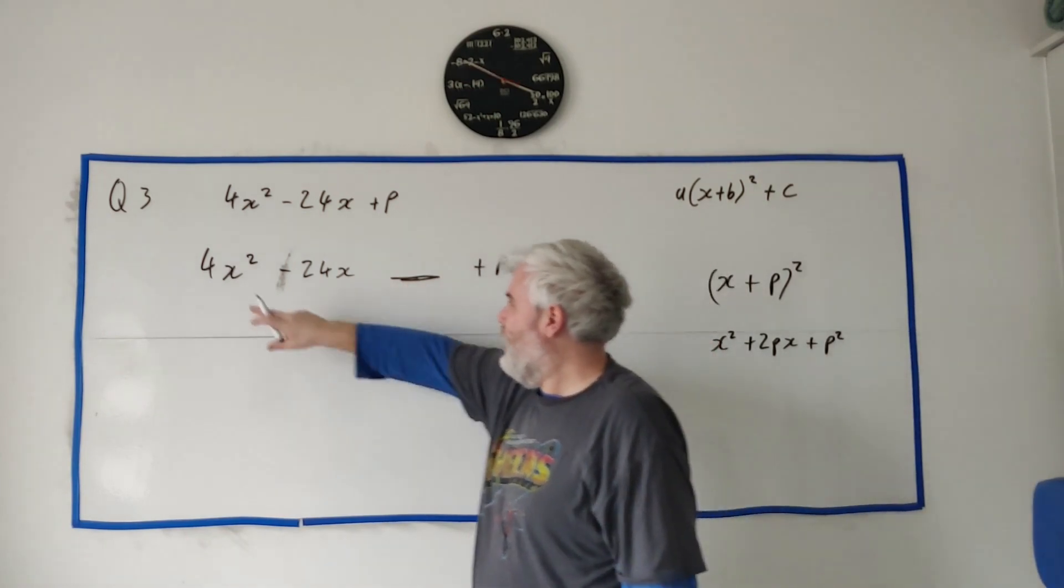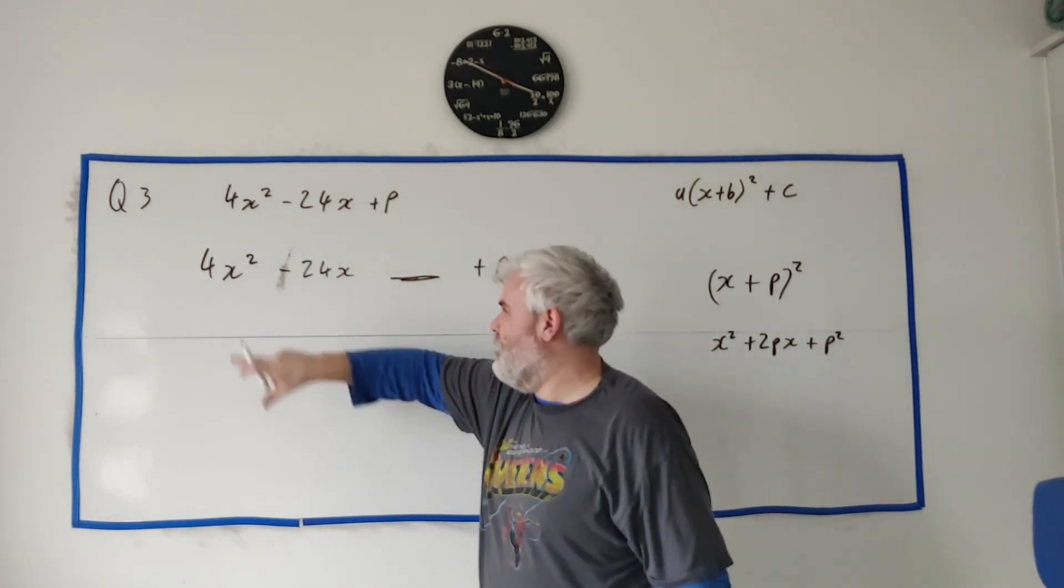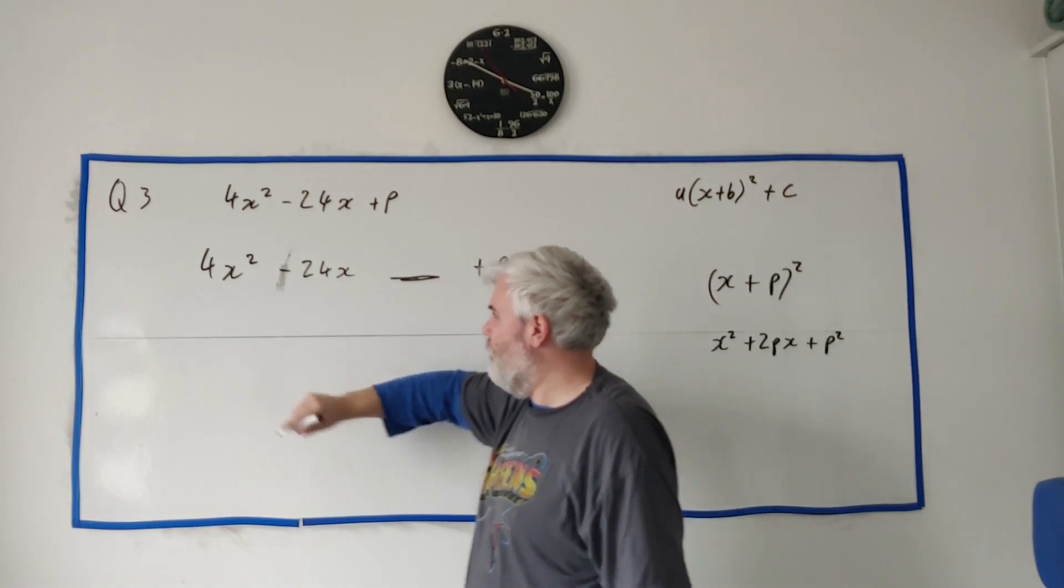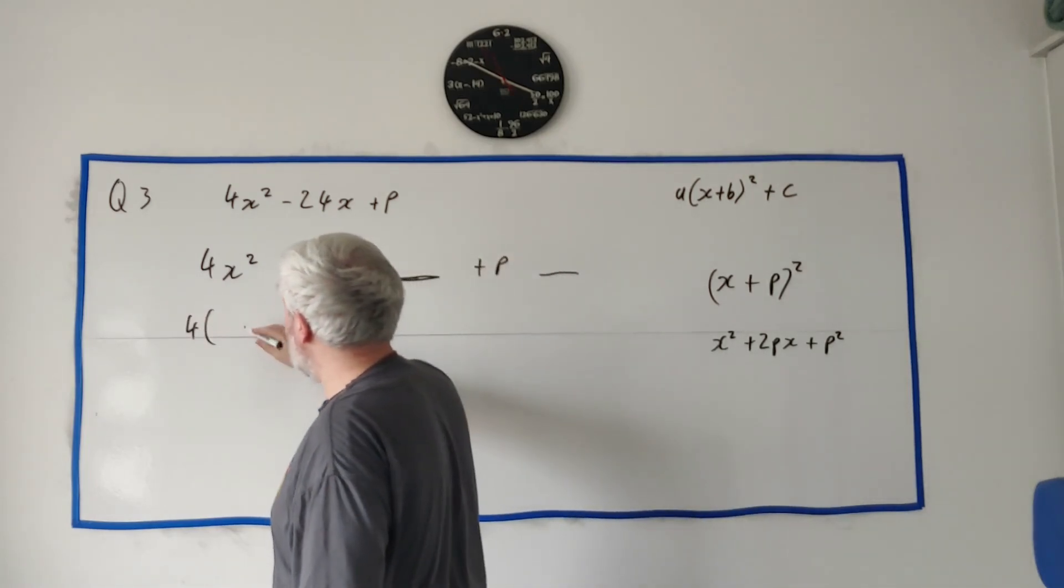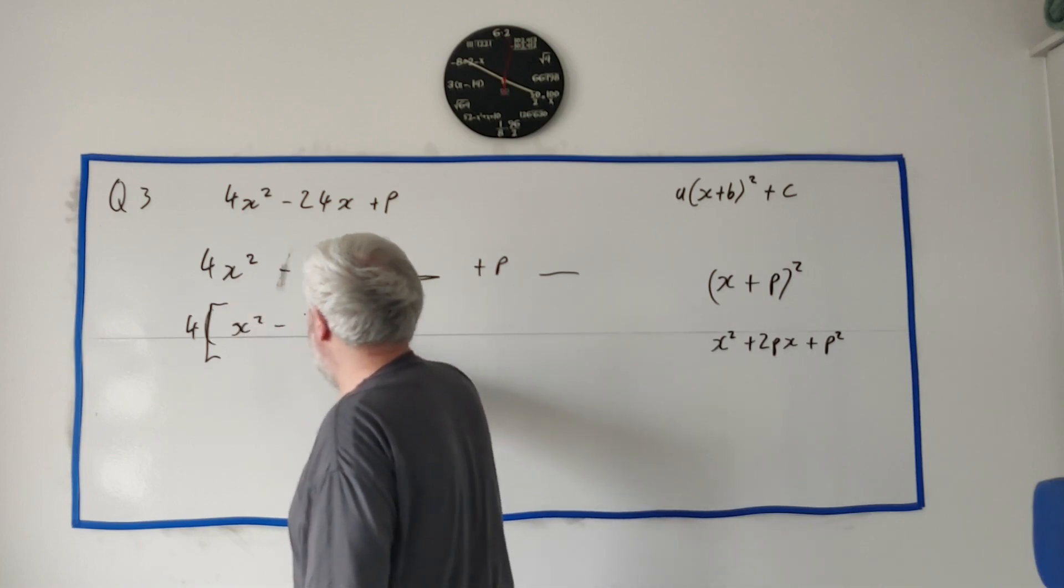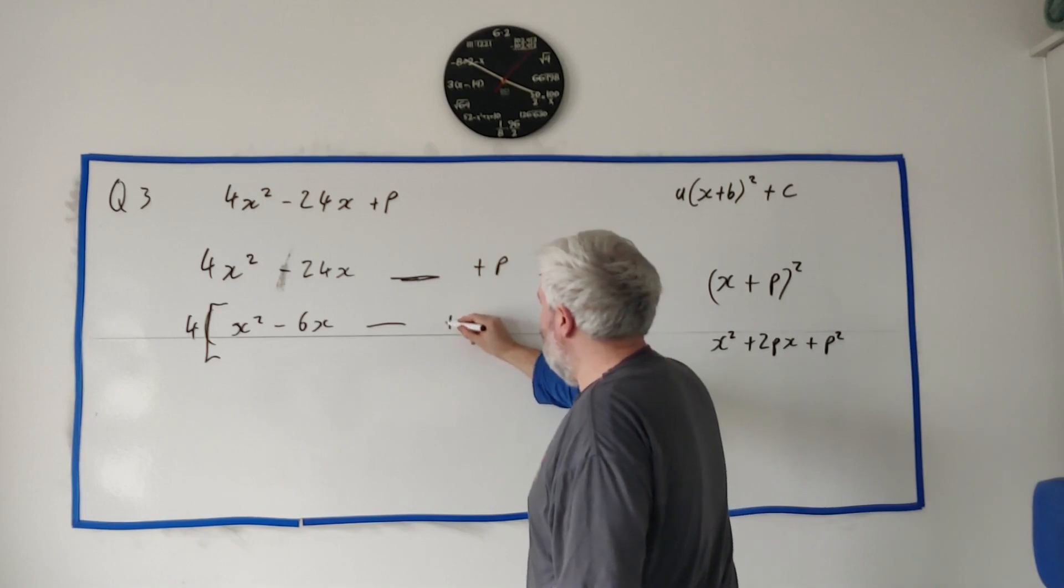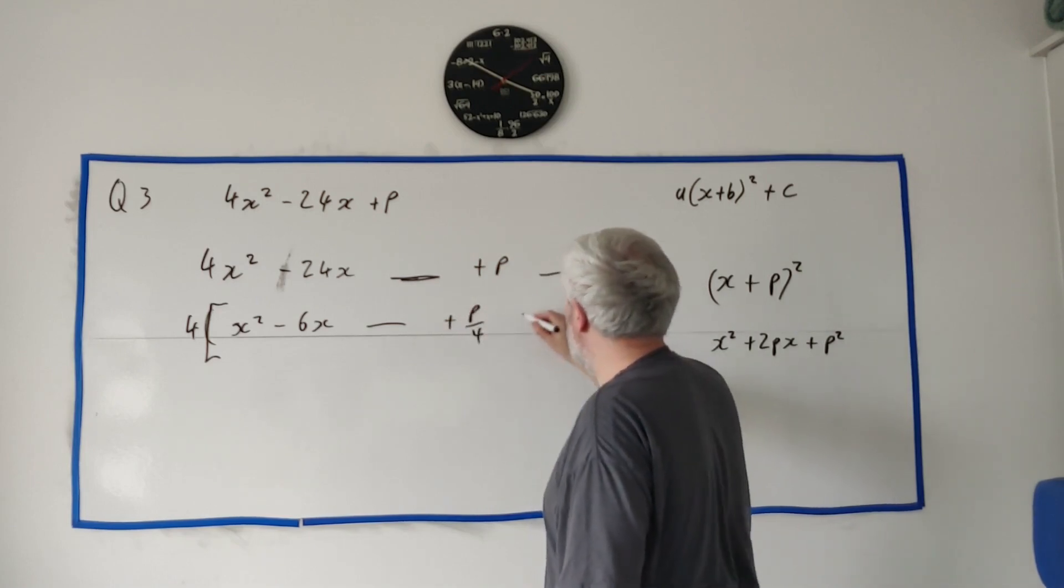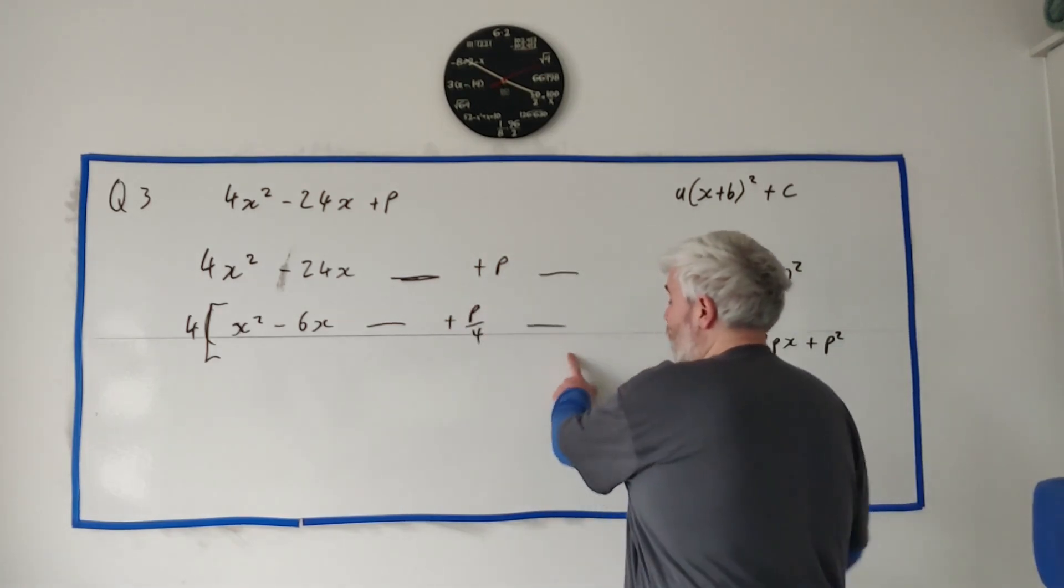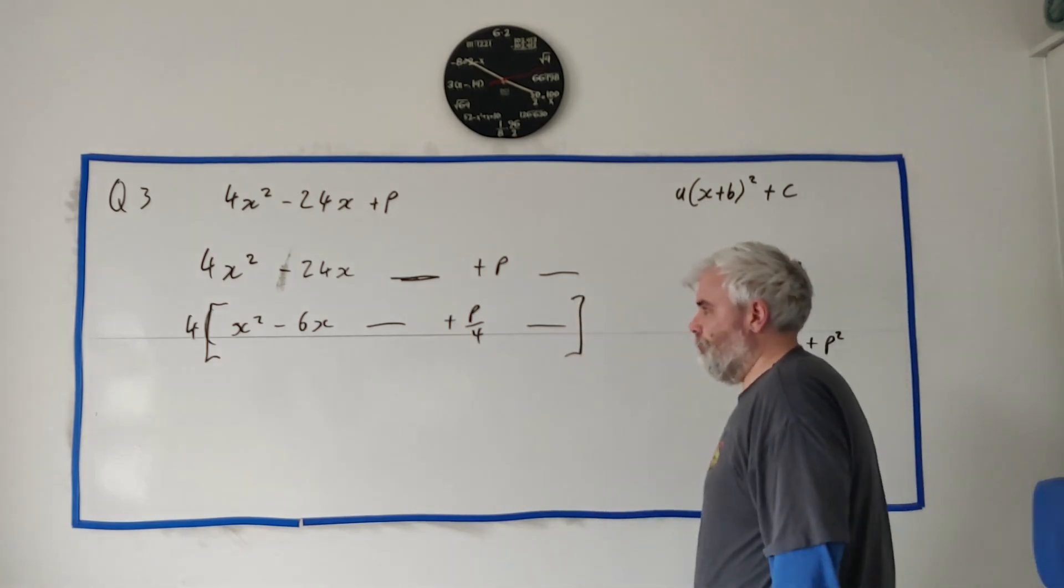But just to make it a little easier, let me get rid of this 4. Let me just take 4 out of everybody. Let's put a big bracket here. x squared minus 6x. Again, I'm going to cheat and put something here, plus p over 4. And I'm going to cheat, fix my cheat here.